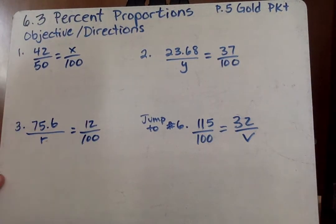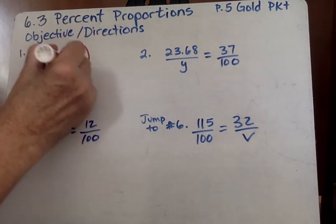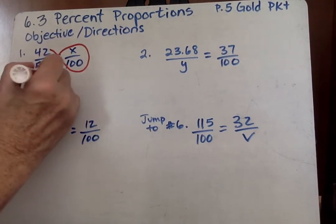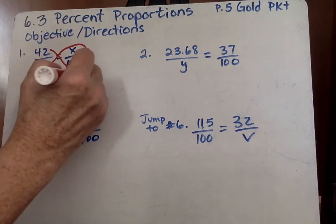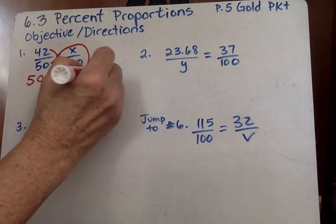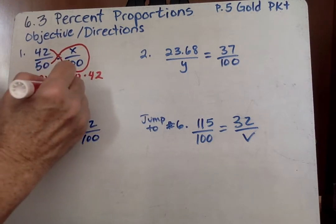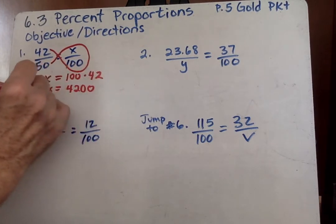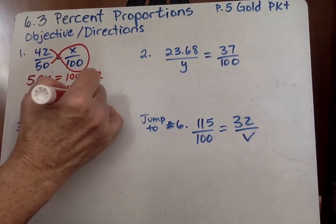So remember I taught you the fish. You should be able to do this. Do all these problems with the fish. You start right here and you go around like that. This times this. 50 times x equals 100 times 42. So we have 50x equals 100 times 42 is 4200.